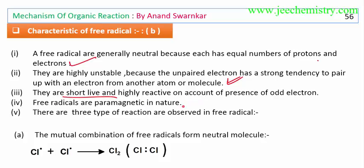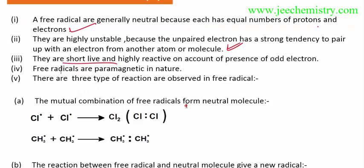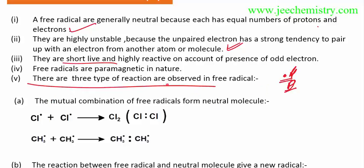A free radical is paramagnetic in nature because there is one unpaired electron. If there were two or three paired electrons it would be diamagnetic, but with one unpaired electron it is paramagnetic.